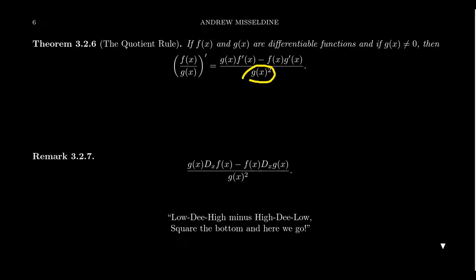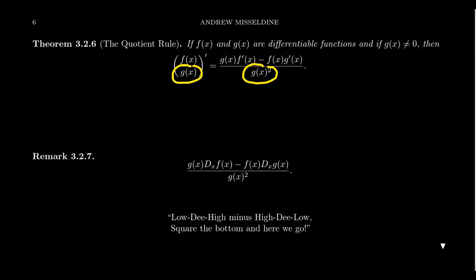We take the bottom function and square it in the denominator. The original function was a quotient of two other functions, and the derivative will likewise be a quotient. The function that was on the bottom goes to the bottom squared — we're not taking the derivative there, it's just g of x squared. When you look at the numerator — g of x times f prime of x minus f of x times g prime of x — that looks a lot like the product rule.